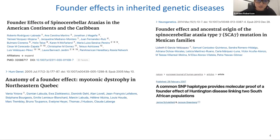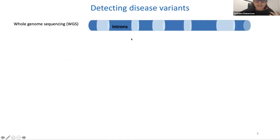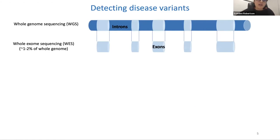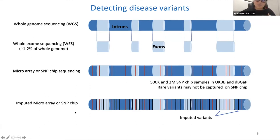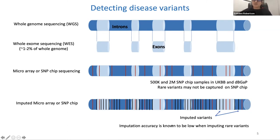The fact that affected individuals share fragments of the original disease haplotype means we can predict individuals with disease variants by inferring whether they have inherited known disease-causing haplotypes. Disease variants have traditionally been identified using whole genome or whole exome sequencing — both expensive. The predominant data type in public databases is SNP chip data, and hundreds of thousands of individuals have only SNP chip data. However, rare variants may not be on SNP chip and imputation accuracy is known to be low for rare variants.